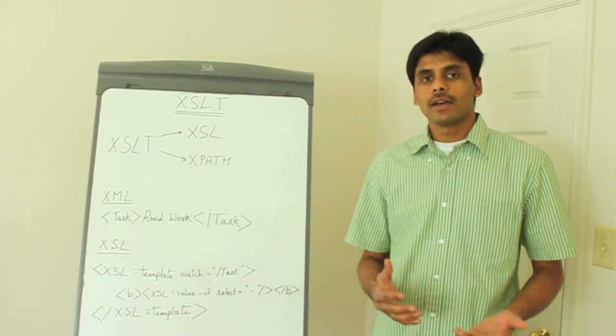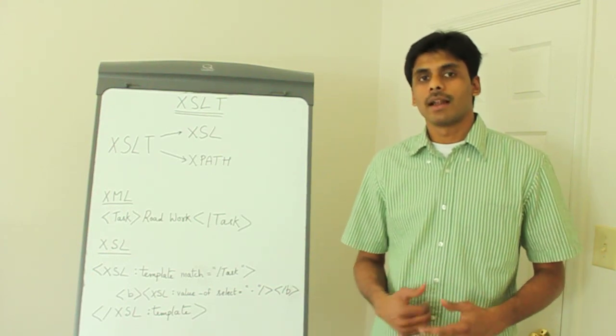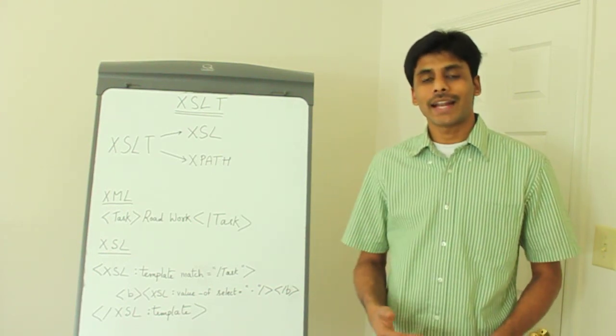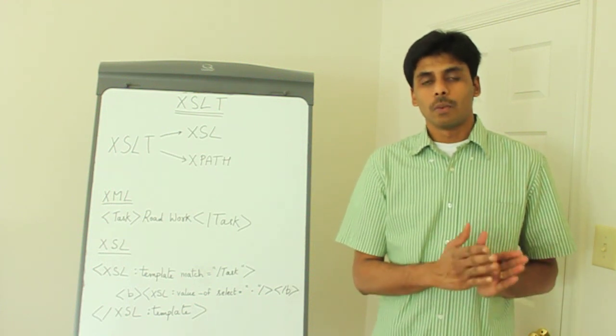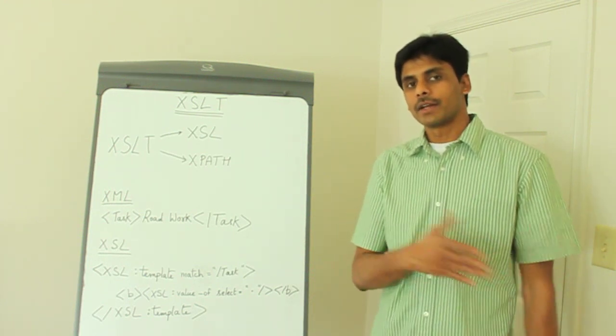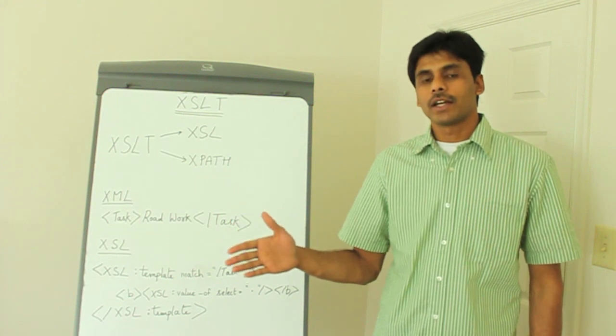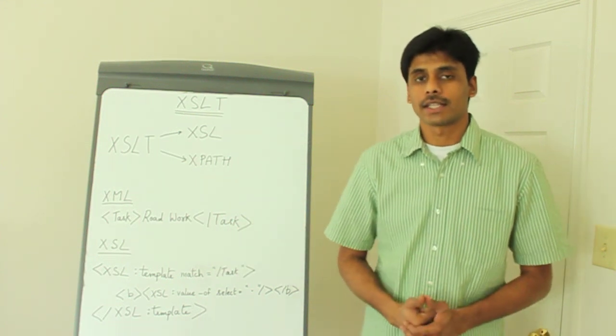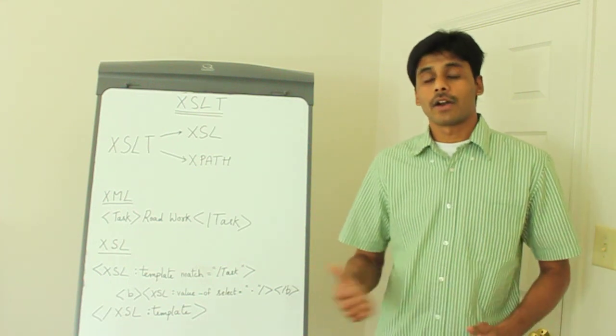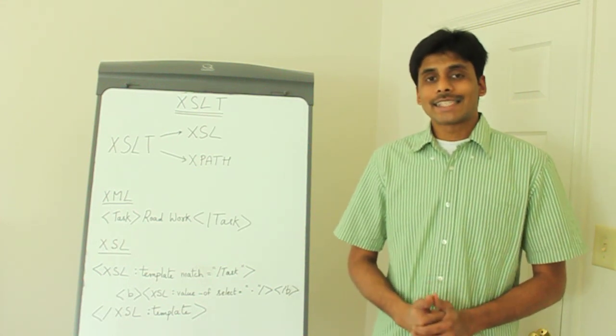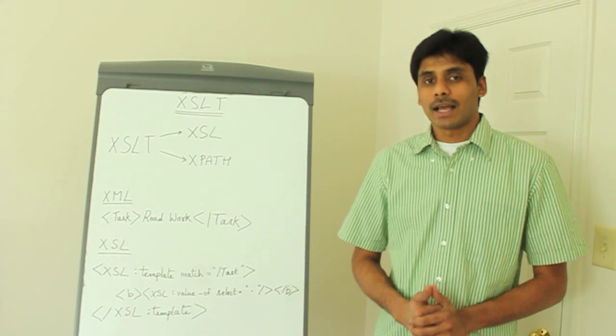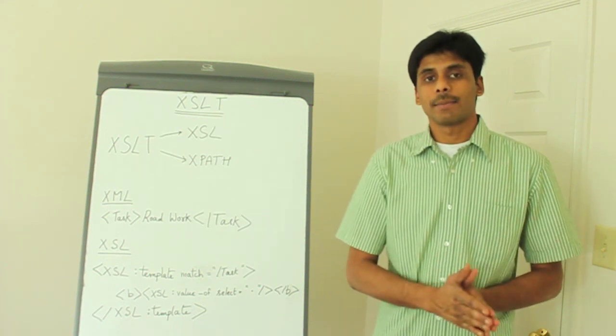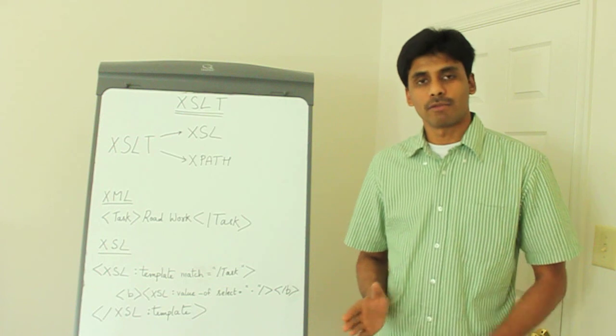When these two systems exchange XML messages, there needs to be a translation layer which can convert order ID to order number when it goes from one system to the other, and order number to order ID when a message comes back. That is exactly where XSLT comes in, and it allows us to transform one XML format to another XML format.